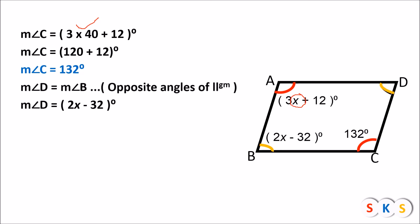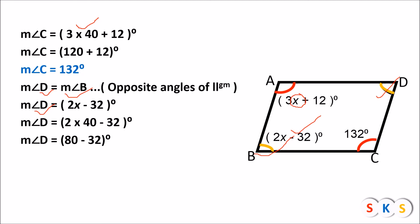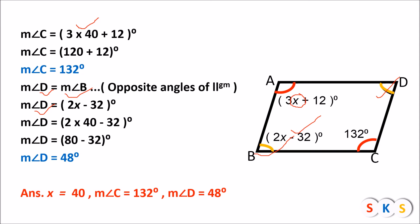Angle D and angle B are opposite angles of a parallelogram, and opposite angles of parallelograms are congruent. Therefore, angle D equals angle B. Angle B is given as 2x minus 32, so angle D will also be 2x minus 32. Substituting x equals 40: 2 times 40 minus 32 equals 80 minus 32, which equals 48 degrees. So the value of x is 40 degrees, angle C is 132 degrees, and angle D is 48 degrees.